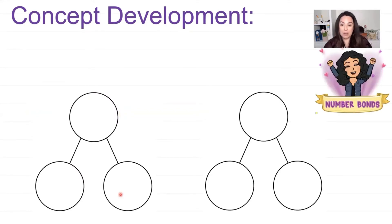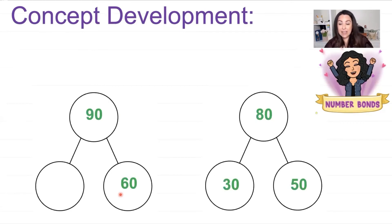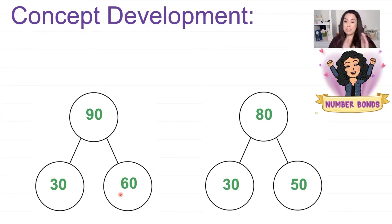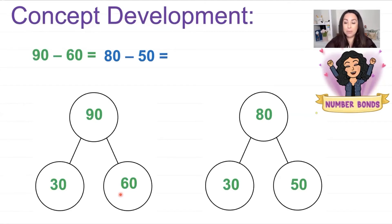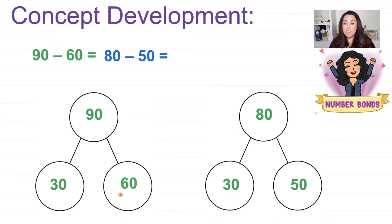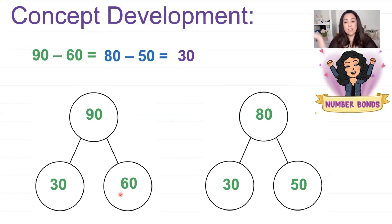Let's look at a number bond. We started with 80 and 50 and the difference was 30. On the next problem, we had 90 and 60 — the difference was also 30. When I added the same amount to both the top and bottom, it didn't matter; as long as you added the same amount, the difference stayed the same. We can say 90 take away 60 is the same as 80 take away 50 — remember the equal sign means 'the same as,' like a balanced seesaw. So 90 take away 60 is the same as 80 take away 50 is the same as 30.